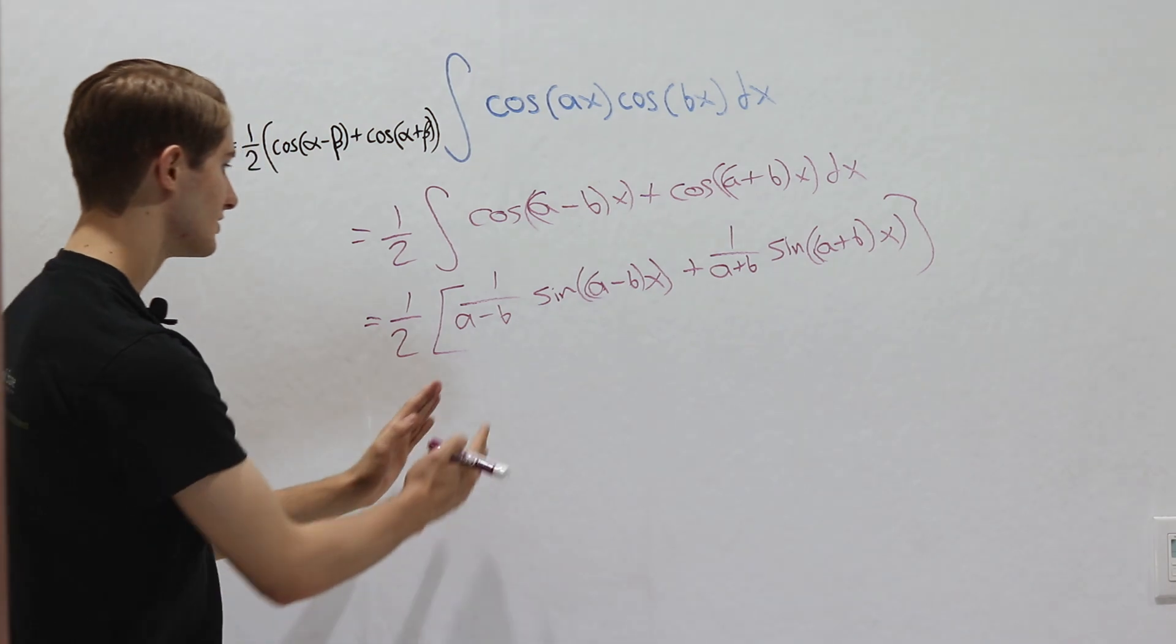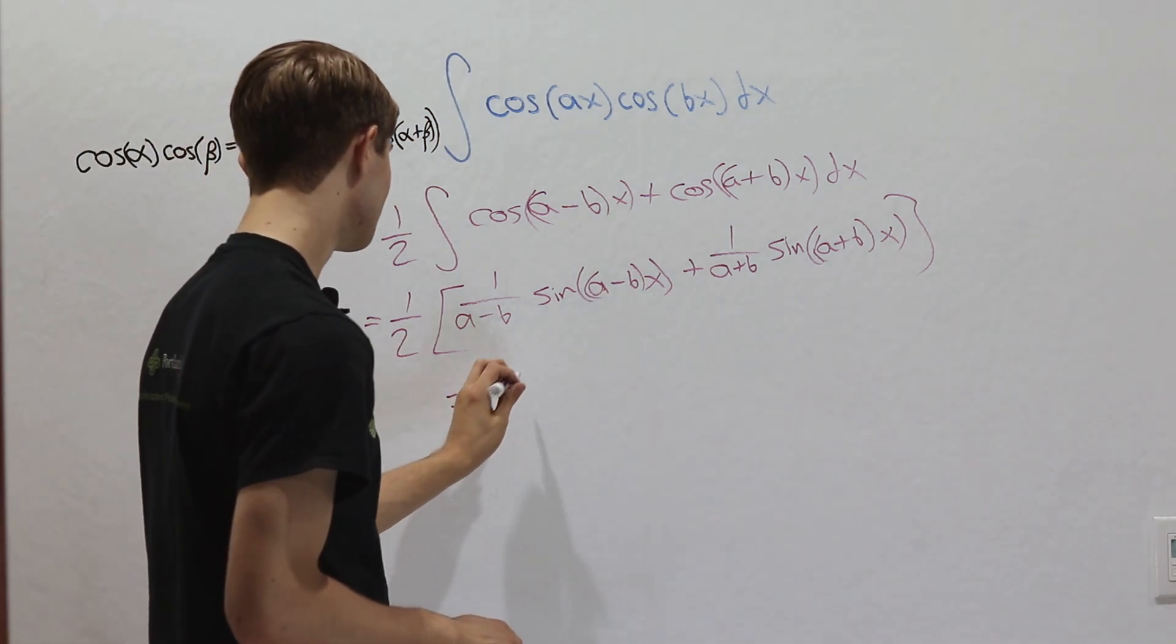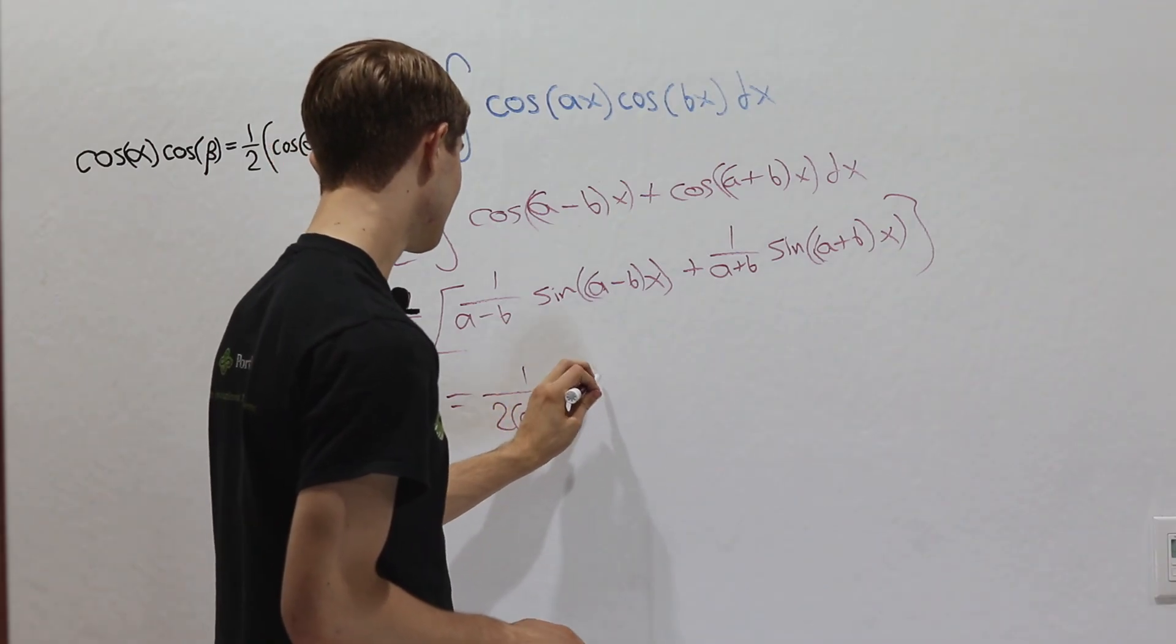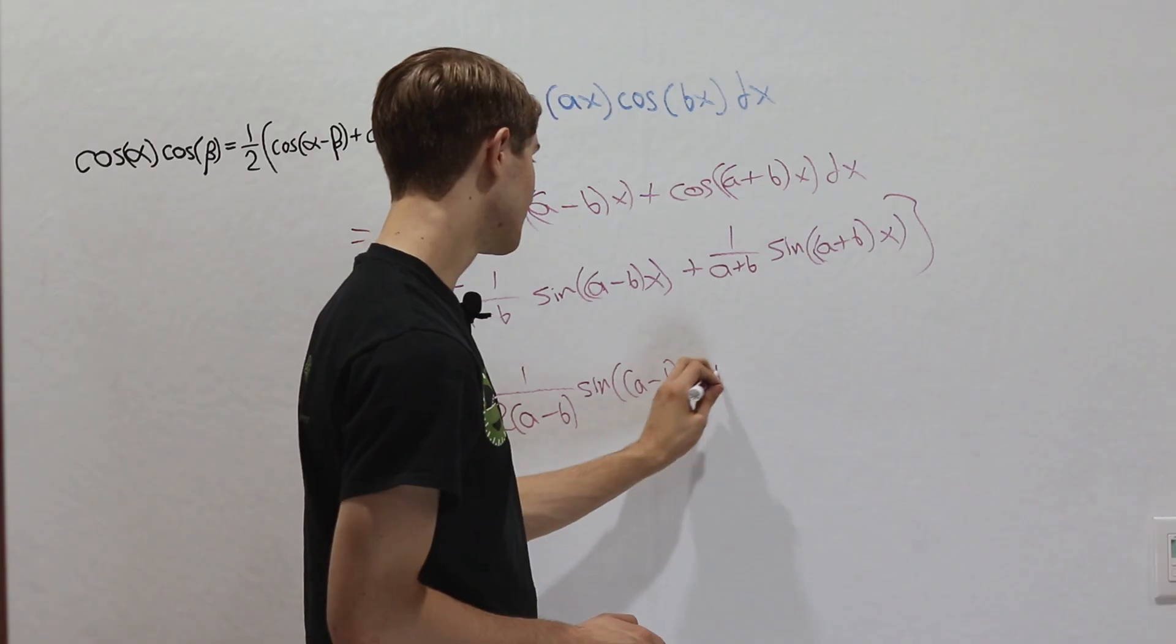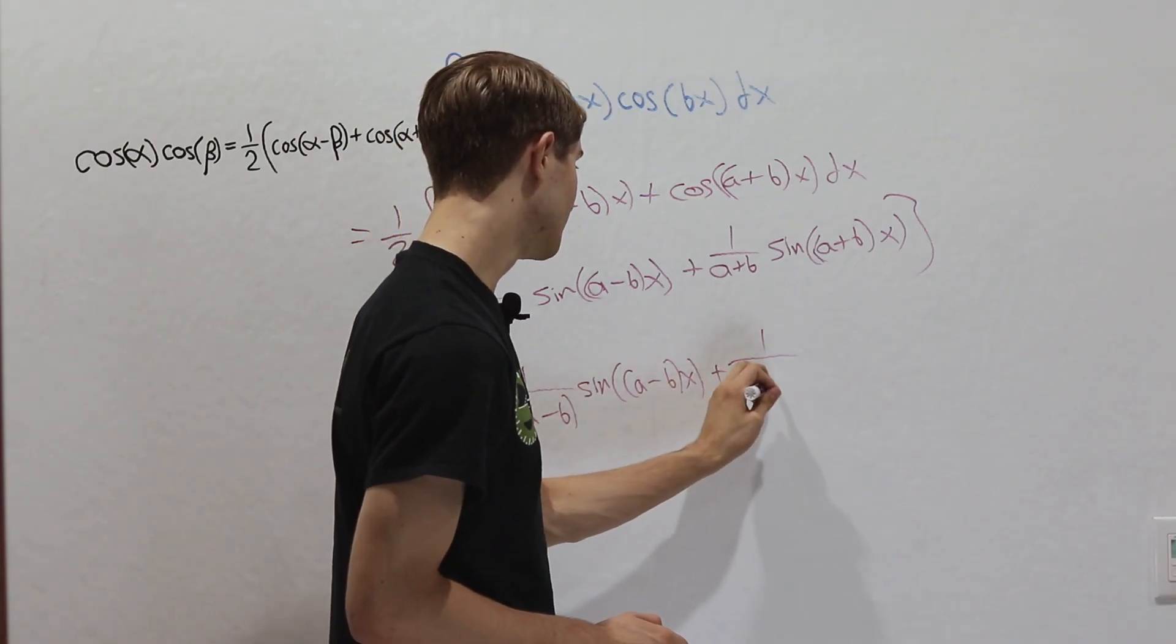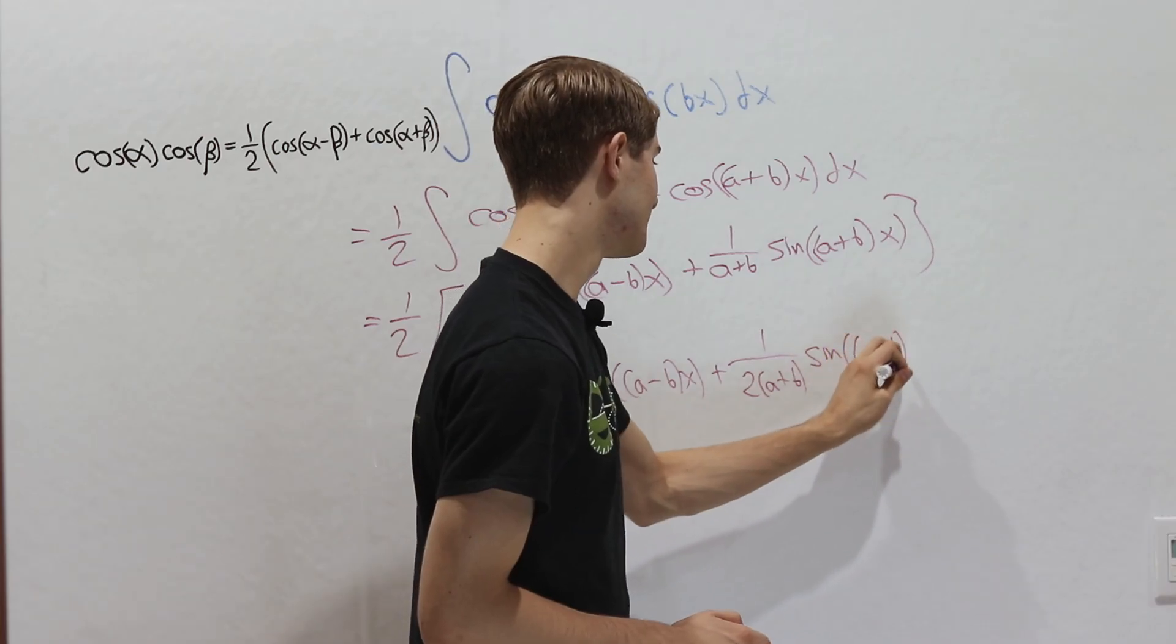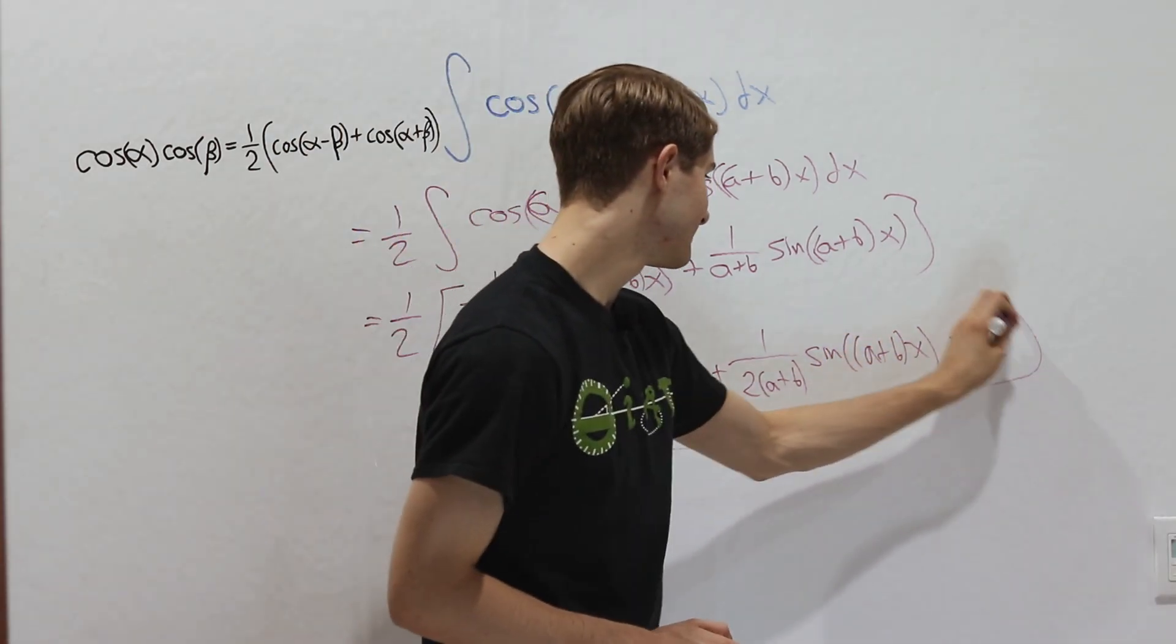Now all we need to do is distribute this 1 half into both parts of this integral. So you get 1 over 2 times a minus b, sine of a minus bx, and then plus 1 over 2 a plus b times sine of a plus bx. And then we're finished with our integral, we can add c.